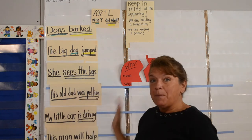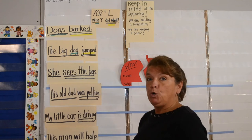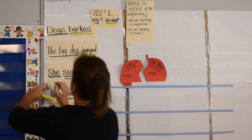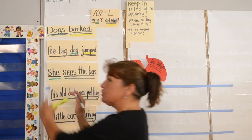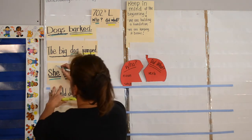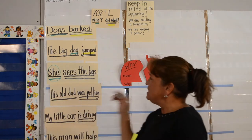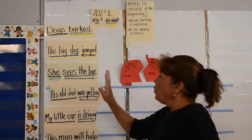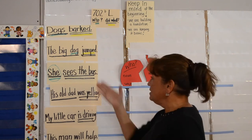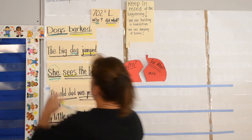She sees the box. What is your noun in the complete who? She. We underline it green. Actually, 'she' is a pronoun, and pronouns we circle with green. She sees the bus. What is your verb in the complete did what? Sees. So we underline 'sees' with yellow.